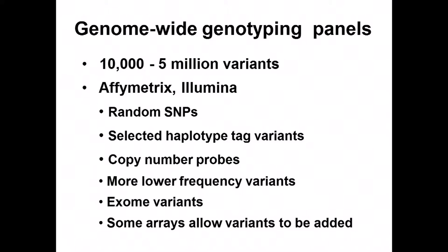Arrays can be designed in different ways: some have random single nucleotide polymorphisms across the genome; others are selected to best represent variation between populations; some have copy number probes; some have a greater collection of lower-frequency variants; and some are designed specifically for variants in the coding regions of genes. Some arrays also allow you to select additional variants of special interest to be incorporated alongside the preset set.